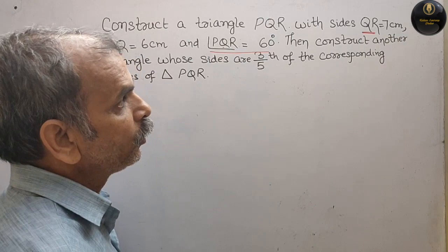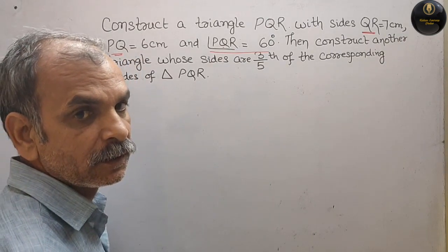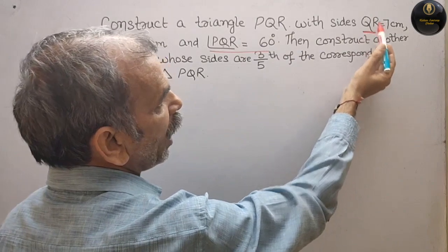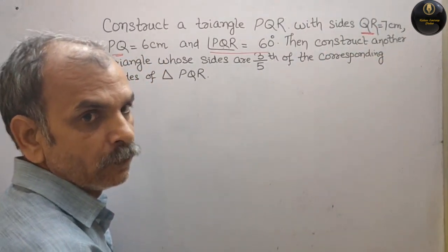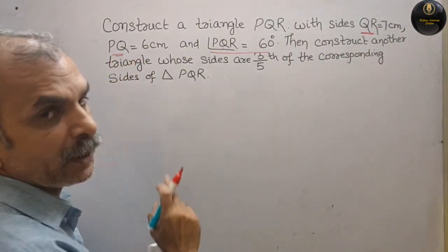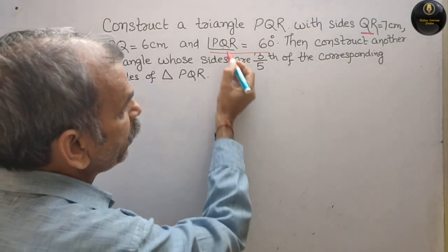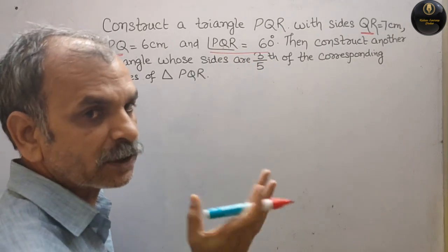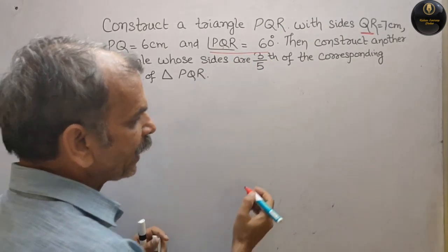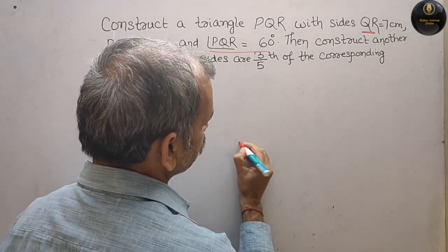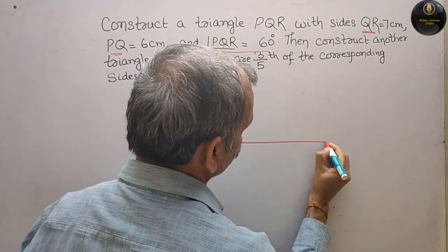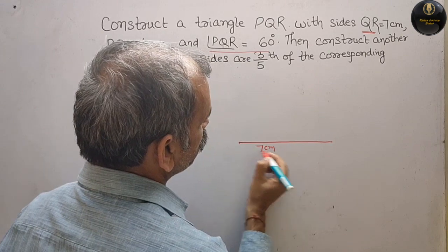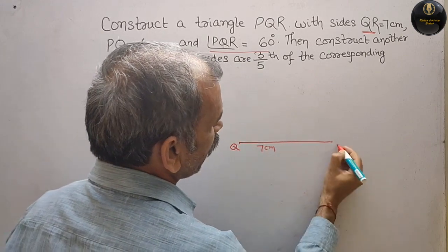तो हम क्या करेंगे, क्या बनाएंगे पहले? We will make QR. PQ नहीं बनाएंगे, QR बनाएंगे, क्यूंकि Q is 60 degree. तो QR is 7 cm. तो आपको scale लेना है और एक line segment बनाना है like this. This is your 7 cm — this is your Q and R.